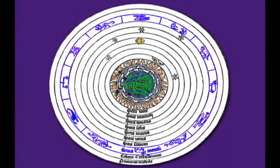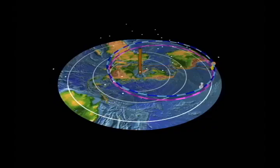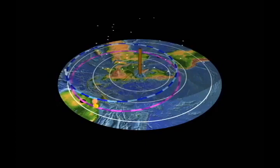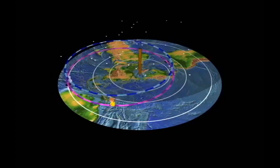The Bhagavatam similarly places 28 constellations, called nakshatras, in a plane just above the moon. The moon completes one orbit in 27 and a third days, and the nakshatras mark its day-by-day motion around the ecliptic.